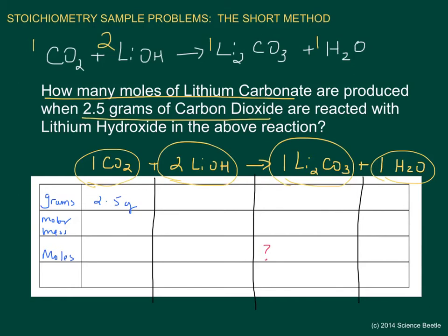The molar mass of carbon dioxide — taking the mass of carbon and two oxygens — is 44.008 grams per mole of CO2. To find moles, we take the grams given, 2.5, and divide by the molar mass. Since we've set it up in the table, we just divide the two values. That gives us 0.0568 moles of carbon dioxide.